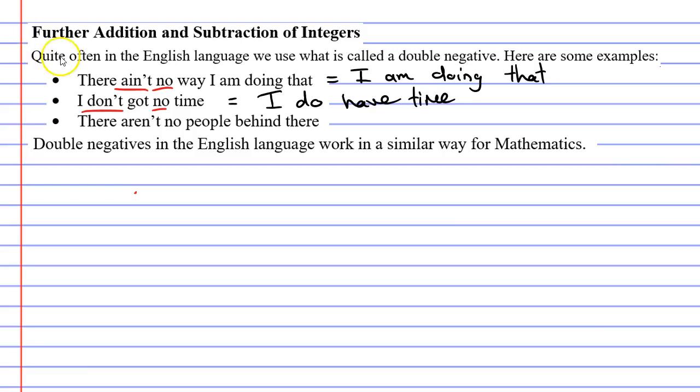The third statement also has two negatives, there aren't no people behind there, so we're really saying there are people behind there. So how does this relate to mathematics?